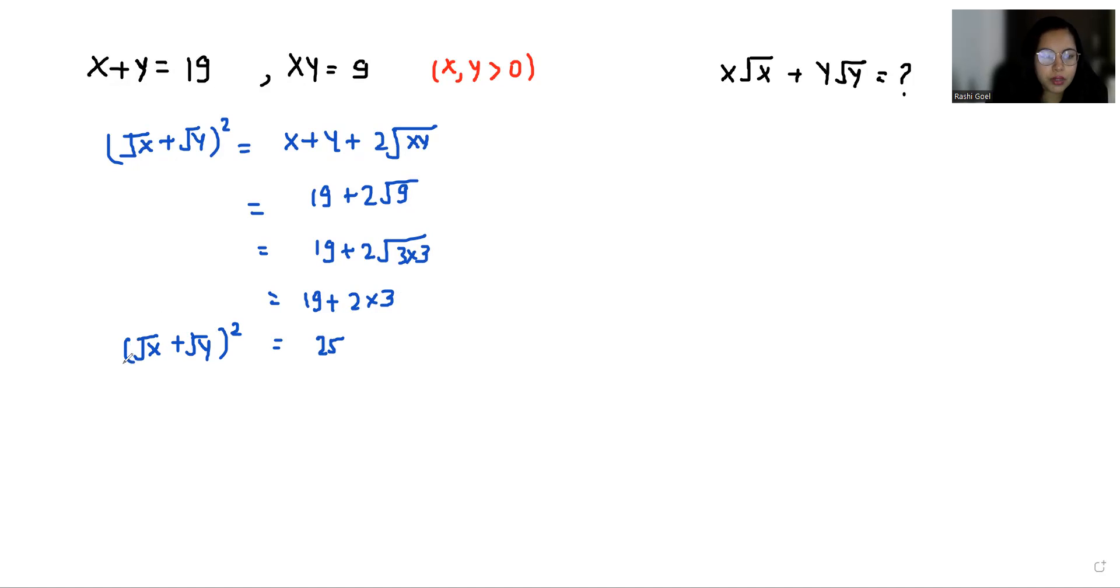If I'm taking square root on both sides, this square eliminates the square root and 25 square root is plus minus 5. As we already discussed that x and y both are greater than 0, so we reject the negative case.